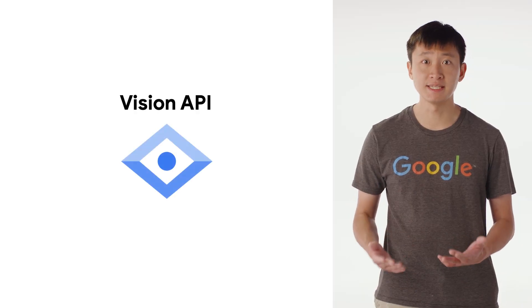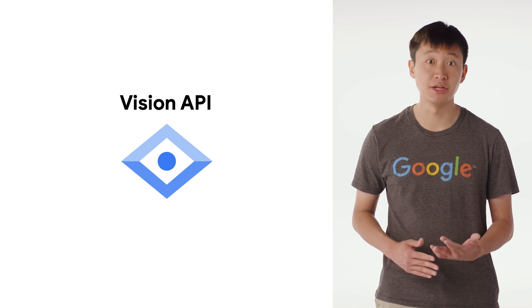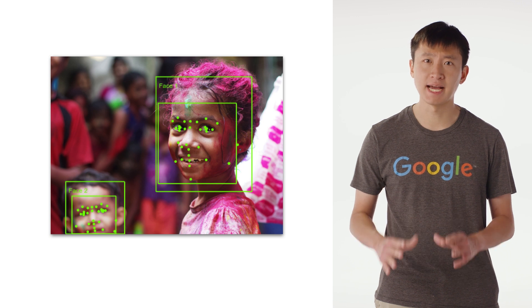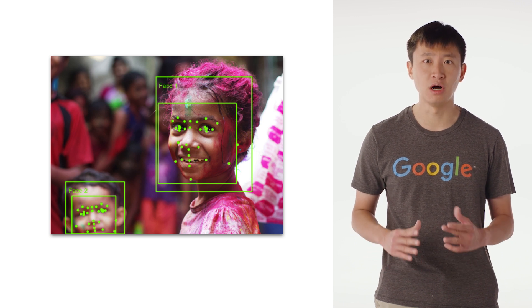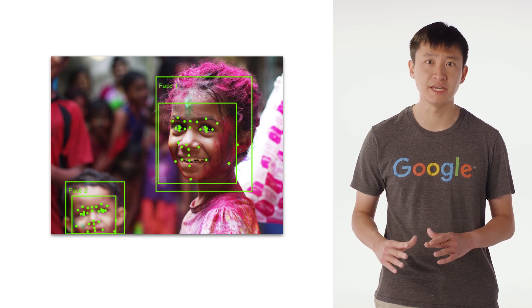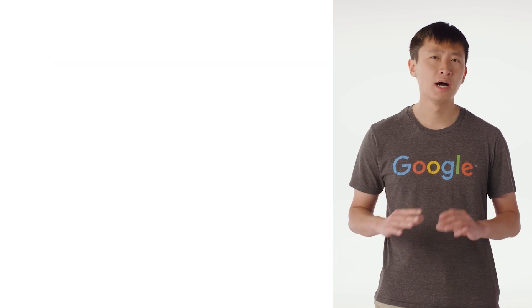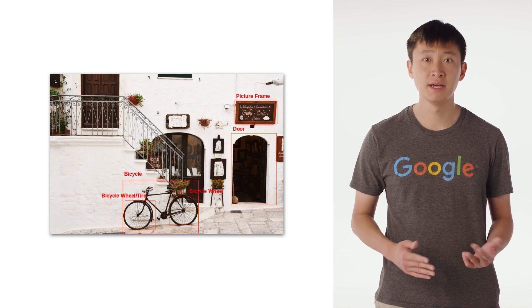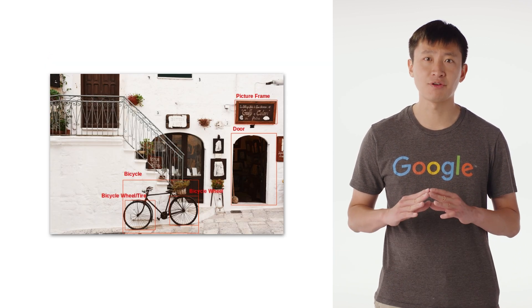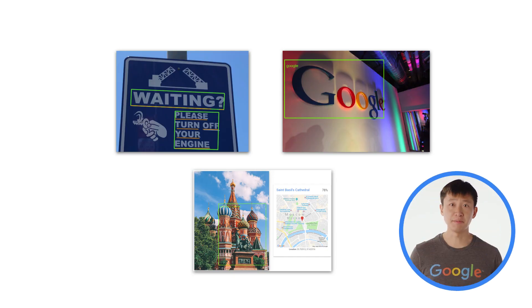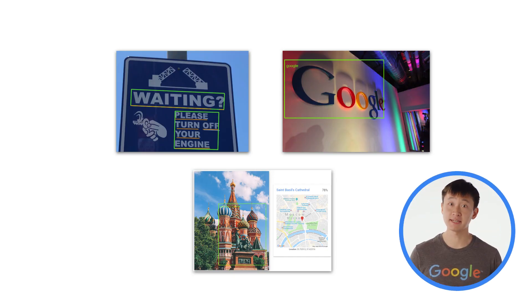The Vision API lets you gain insights about your image using Google Cloud's pre-trained vision models. One feature is face detection — detecting different faces in an image, along with the likelihood that each face has emotions like joy, sorrow, and anger. Another feature is object detection, detecting different objects in the image with a confidence score for each one. The Vision API also makes it easy to detect text, logos, and landmarks.